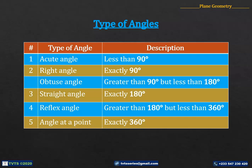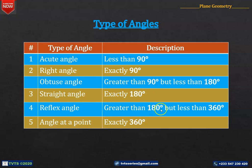By way of recap of our previous lesson, we learnt that an acute angle is an angle that is less than 90 degrees. A right angle is exactly 90 degrees. An obtuse angle is greater than 90 degrees but less than 180 degrees. A straight angle measures exactly 180 degrees. An angle at a point is exactly 360 degrees. We will make use of these definitions as we go along. It is therefore necessary to keep them at your fingertips.